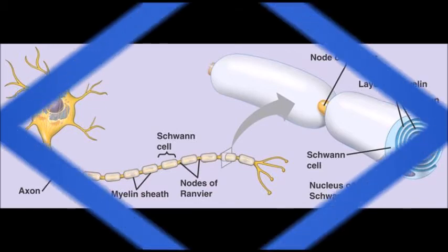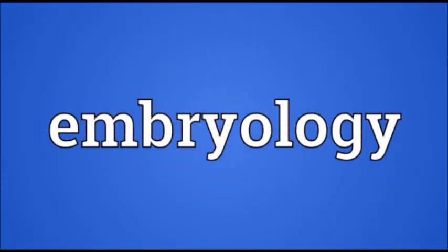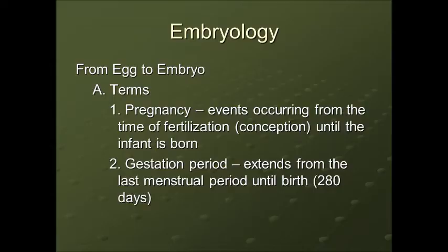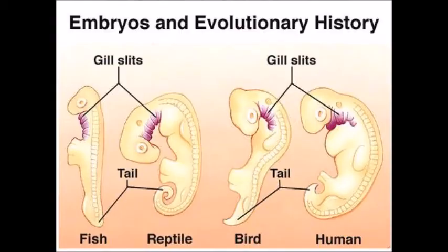The second one is embryology. It is the study of the reproductive system in animals related to the development of the embryo — that is, the sex organs, formation of gametes, their fusion, and the development of the embryo.